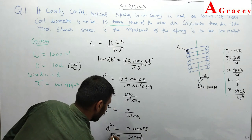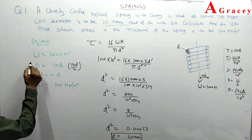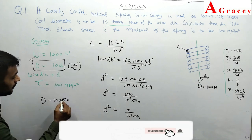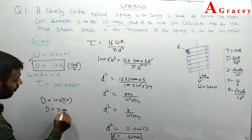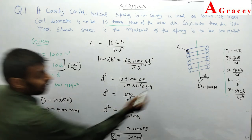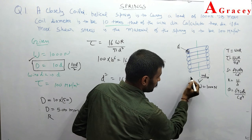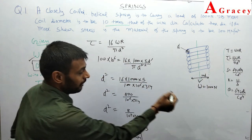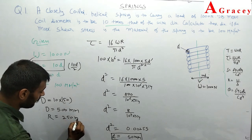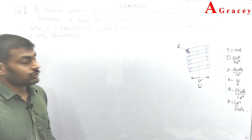With small d = 50 mm identified, we can easily find capital D: D = 10 × 50 = 500 mm, which is the mean diameter of the coil. The mean radius r = D/2 = 5d = 250 mm. So the answers are: wire diameter d = 50 mm and mean coil radius = 250 mm. Next question.